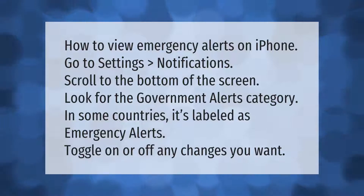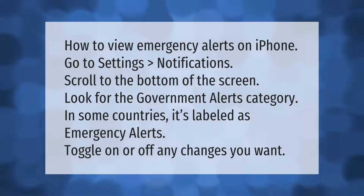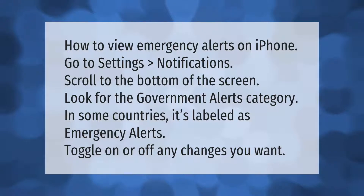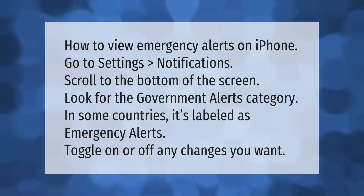How to view emergency alerts on iPhone: go to Settings, then Notifications, and scroll to the bottom of the screen. Look for the Government Alerts category — in some countries it's labeled as Emergency Alerts. Toggle on or off any changes you want to make.